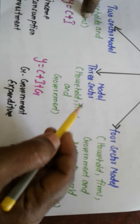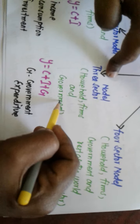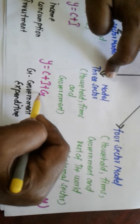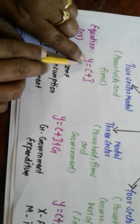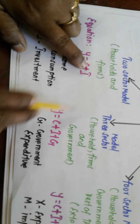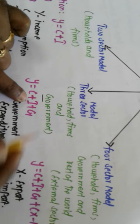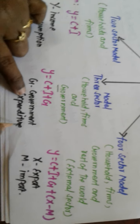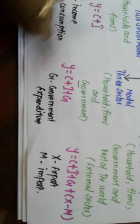For the three-sector model, we take the two-sector components — household and firm — and add another one: government. So the formula for the three-sector model is Y equals C plus I plus G, where G refers to government. This includes both government expenditure as well as government welfare activities.